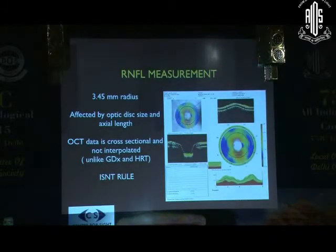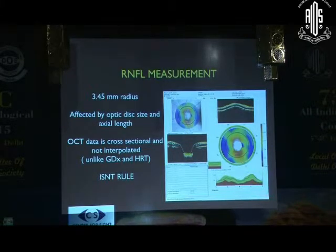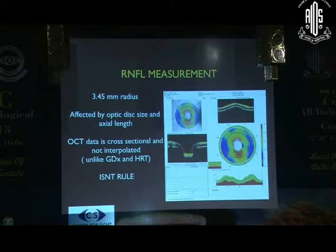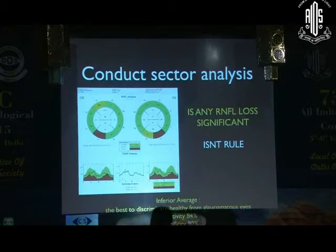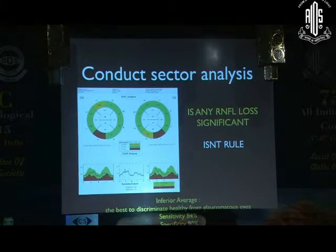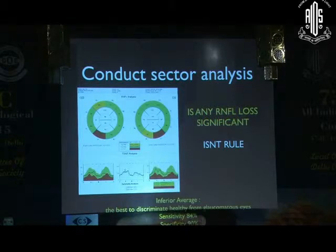The retinal nerve fiber layer is depicted in terms of a thickness map, an RNFL calculation circle, and a signal profile or TSNIT graph. All values in the OCT are color-coded green, yellow, and red depending upon the percentage probability of falling within 95%, less than 5%, or outside the 1% range of normals. The RNFL analysis is averaged for total hemisphere-wise as well as sector-wise, and it is better to pick up focal defects in the sector analysis, which may be missed in the average values.